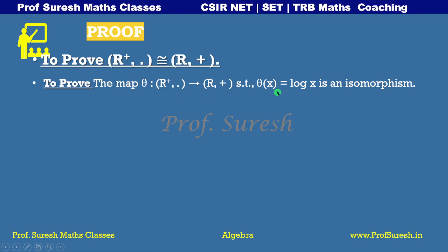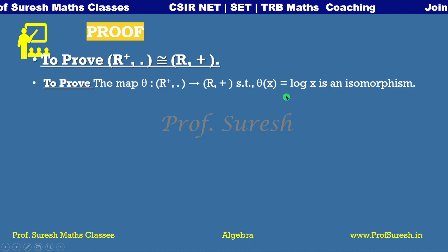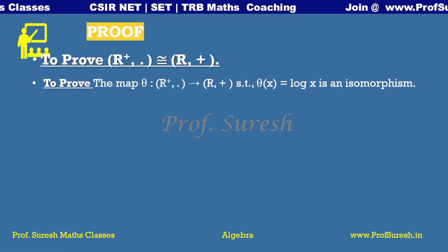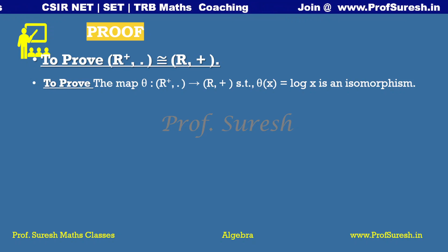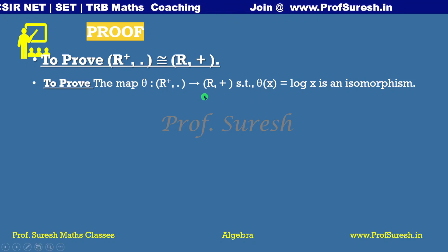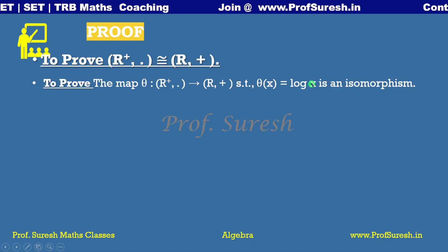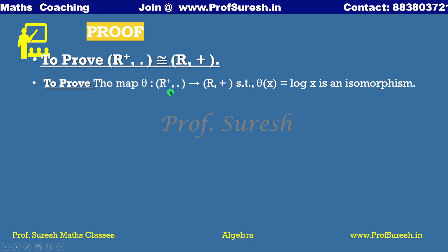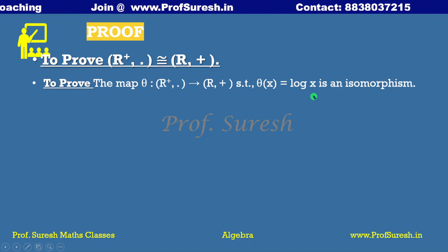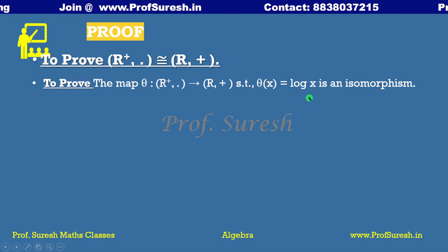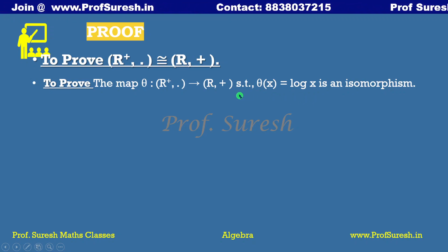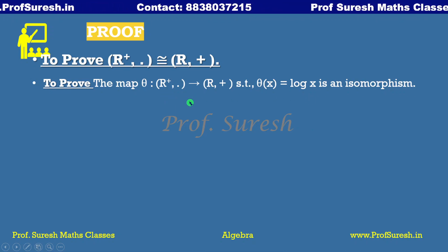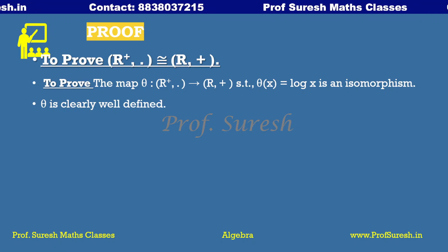The function is defined on the domain. For example, log of minus 2 is not defined — if we have a negative value, the function is not well defined. Since we are working on R plus, the domain consists only of positive real numbers, so theta is clearly well defined.